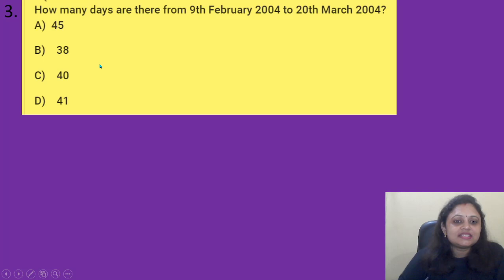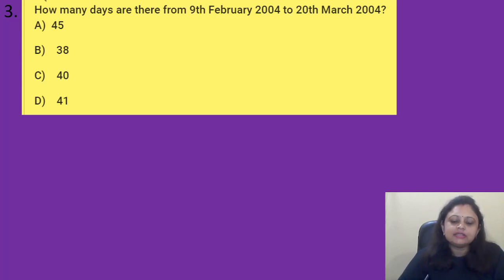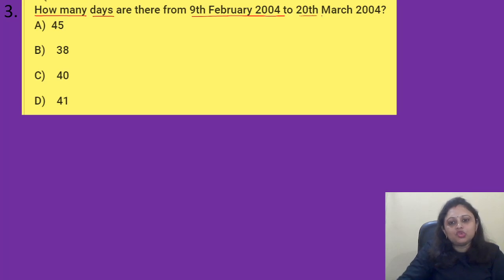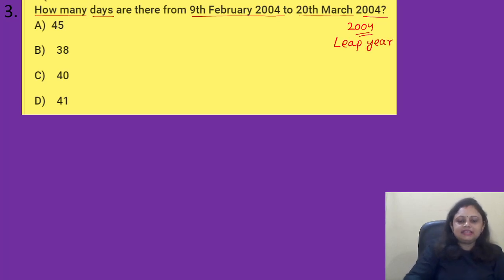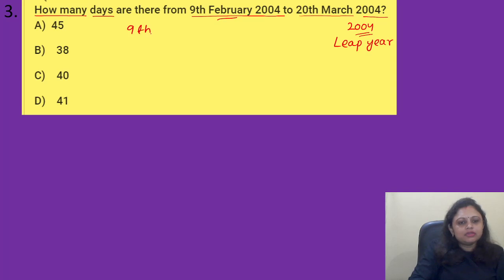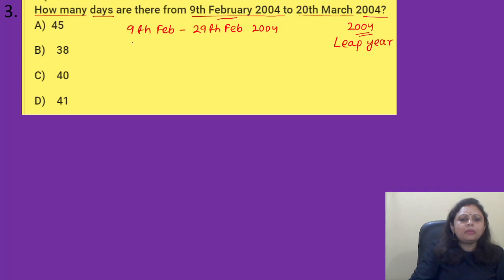Coming to the next question: how many days are there from 9th February 2004 to 28th March 2004? Option A) 45, B) 38, C) 40, D) 41. First, 2004 is divisible by 4, so it is a leap year. That means February 2004 will contain 29 days. So first we will find from 9th February 2004 to 29th February 2004, how many days are there.